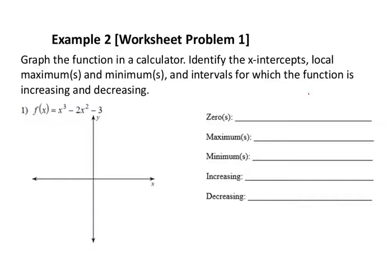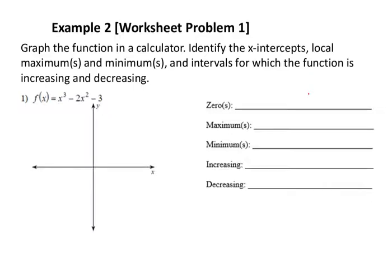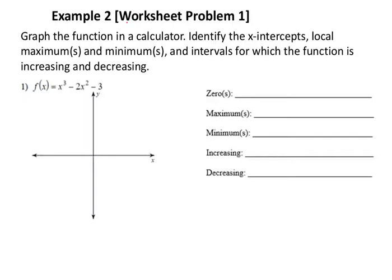The remaining examples emphasize technology usage — how can the calculator help us? We're going to note three key calculator functions: calc zero, calc max, and calc min. Your calculator has a calc menu that can scan a graph for zeros, maximums, and minimums. For the last three examples we're going to do our homework together.